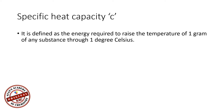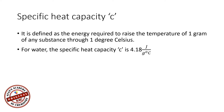Specific heat capacity, represented using lowercase c, is defined as the energy required to raise the temperature of 1 gram of any substance through 1 degree Celsius. For water, the specific heat capacity c is 4.18 joules per gram per degree Celsius. This value can also be expressed in kilojoules per kilogram per degree Celsius.